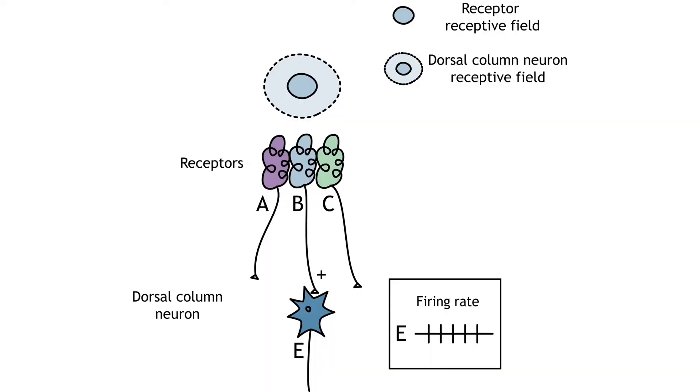The receptive fields of the somatosensory neurons become more complex as information moves up the pathway. We saw in the last lesson that mechanoreceptors have receptive fields that, when touched, activate the neuron.